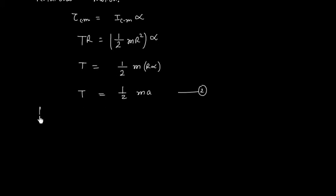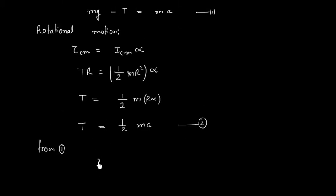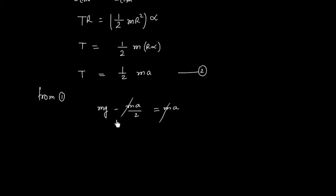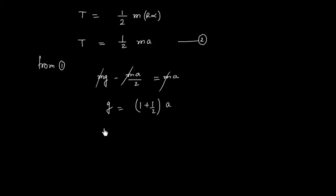Now from equation 1, we will have Mg minus T, where T is MA by 2, equals MA. A cancels, so we will have G equals 1 plus 1 by 2. So 3 by 2 A equals G, therefore acceleration is 2G by 3.